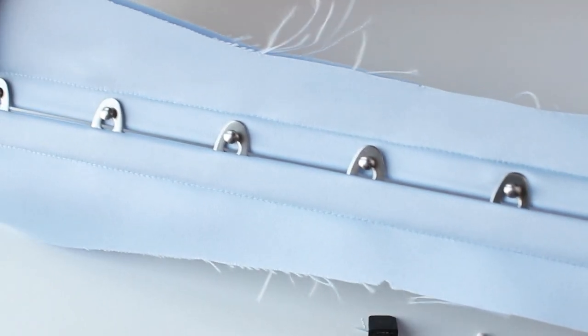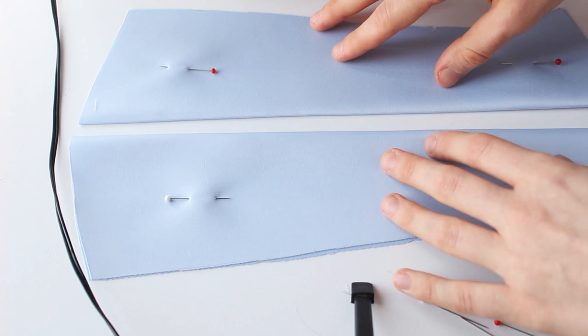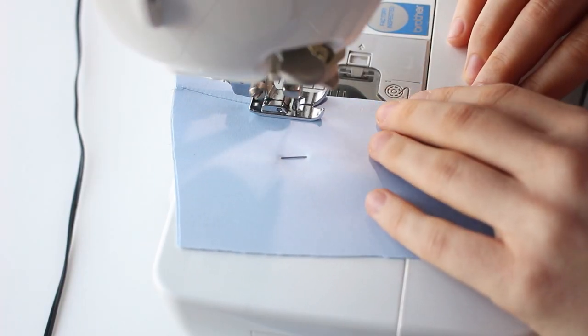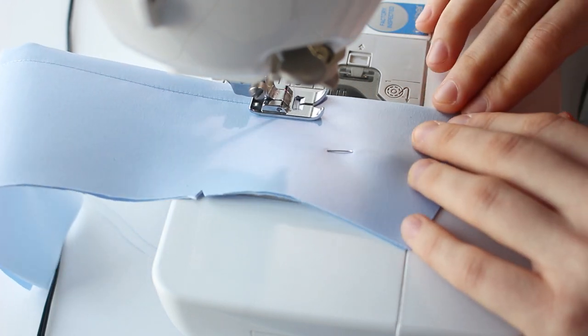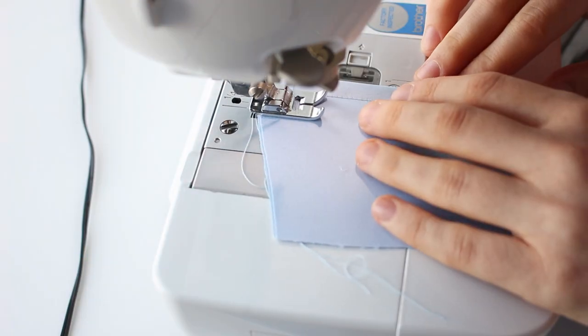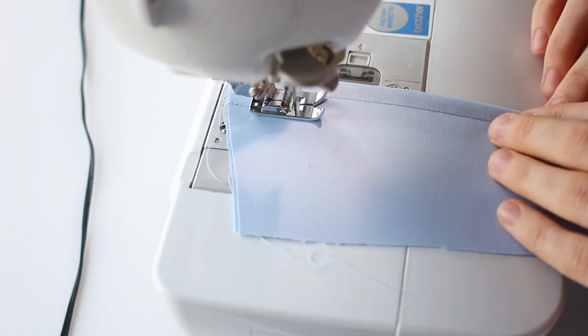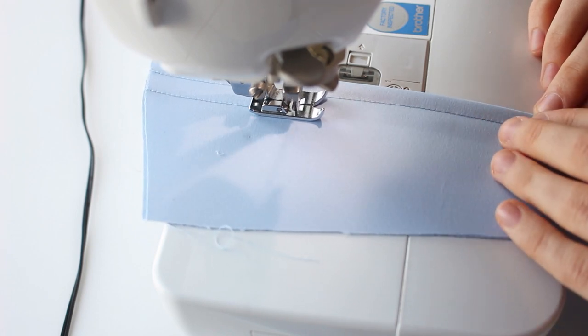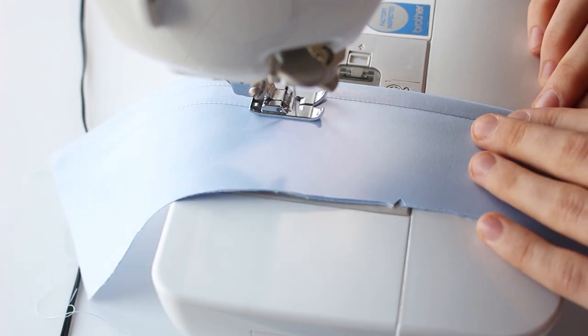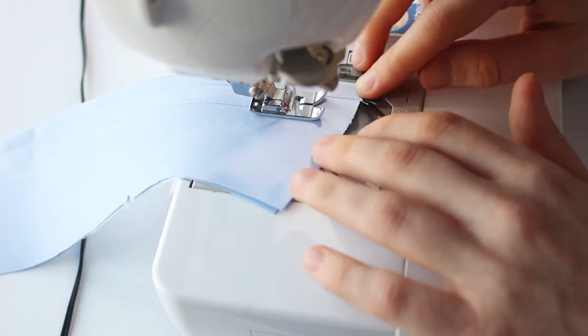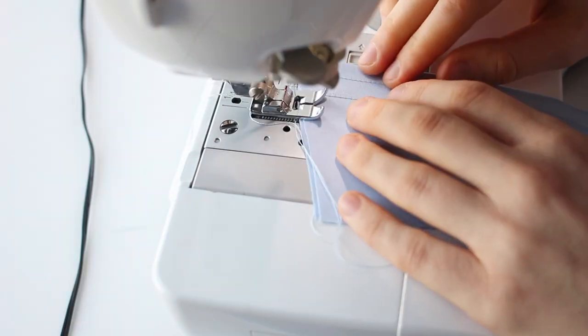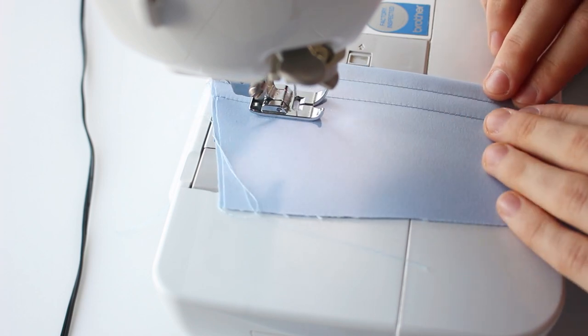When the front panels were done, I moved on to the back panels. I used my presser foot as a guide to make a boning channel. Then I sewed another seam to create a grommet channel. I usually make my grommet channel 3/8 of an inch or 1 cm wide. And then I sewed another seam for the last boning channel.